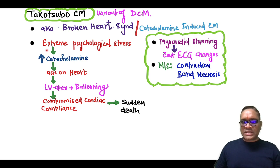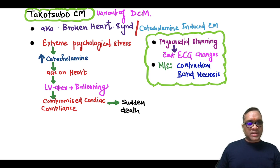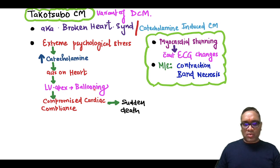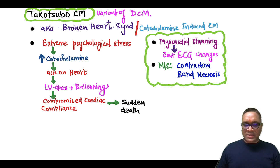Whenever a person is under extreme psychological stress, catecholamines will surge and they will act on the heart, specifically on the left ventricle apex, and that will lead to apical ballooning. This will compromise cardiac compliance and that will be the reason for sudden death in these patients.